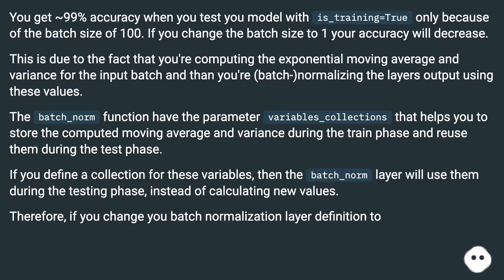The batch_norm function has a parameter called variables_collections that helps store the computed moving average and variance during the training phase, and reuse them during the test phase. If you define a collection for these variables, the batch_norm layer will use them during testing instead of calculating new values.